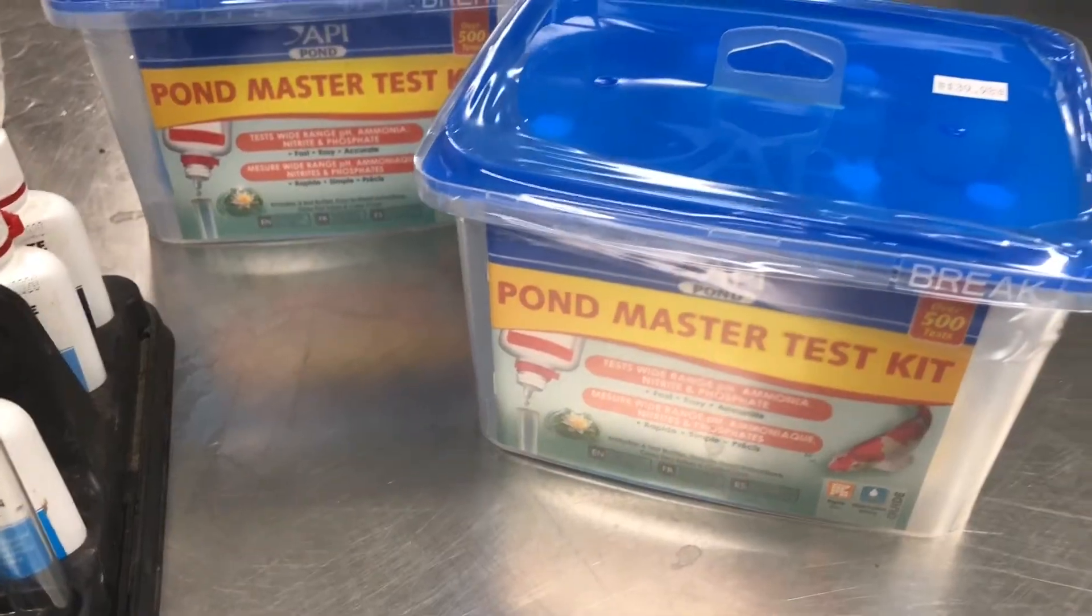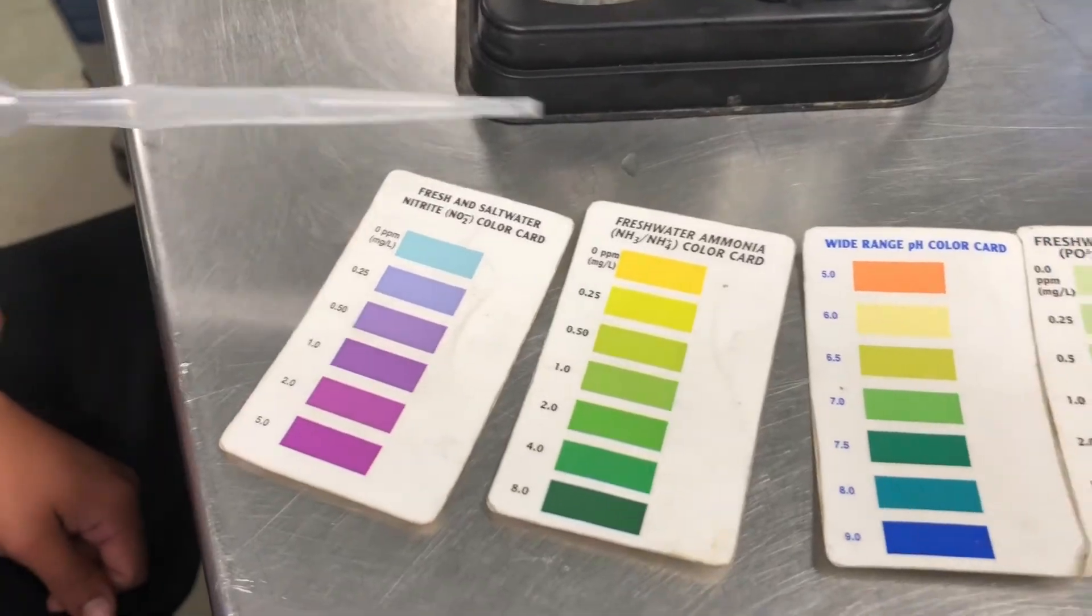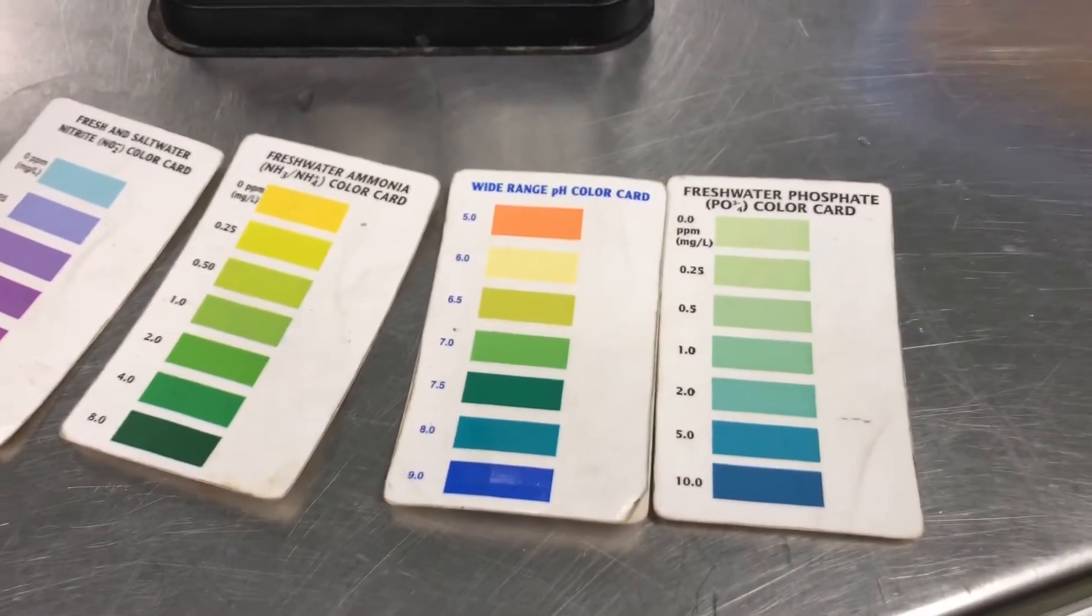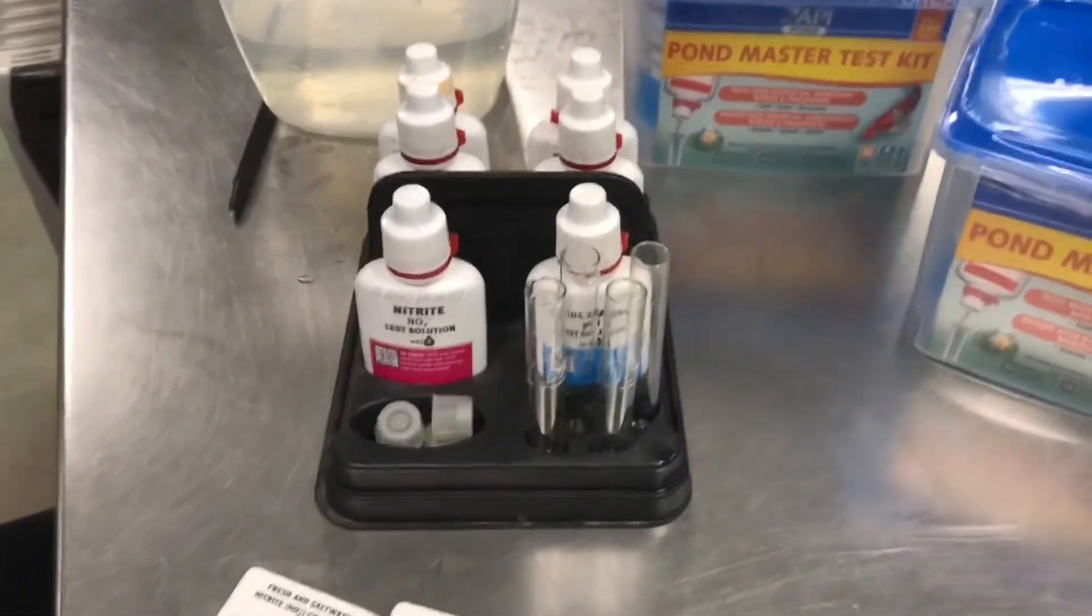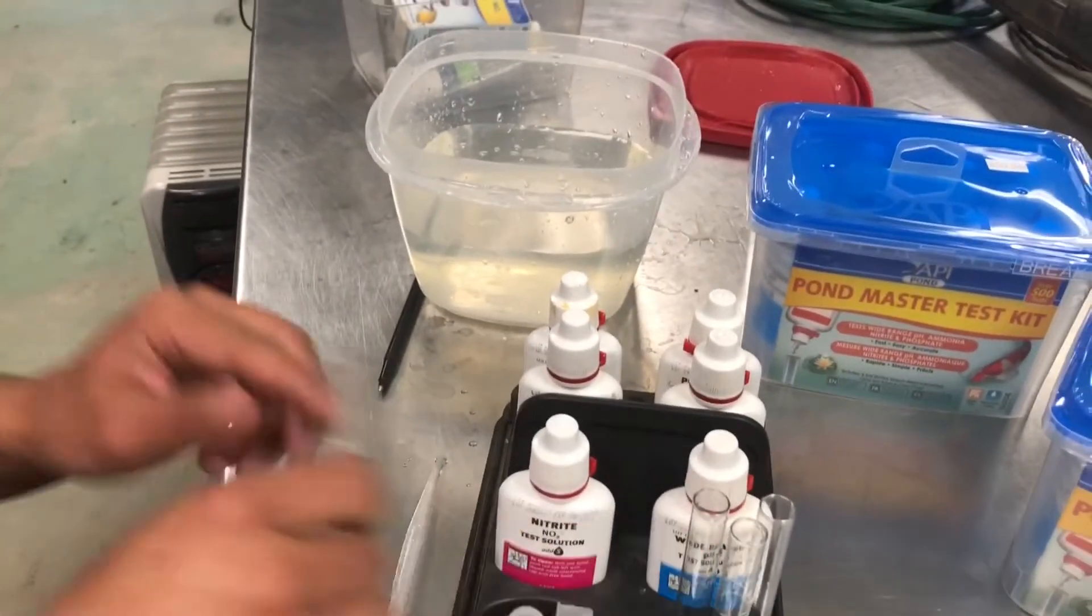And it tests for four different things. It tests for the nitrites, ammonia, pH, and phosphates. So I want to show you how the kit works and what you have to do. So what we're going to be doing is testing some pond water a customer brought in.